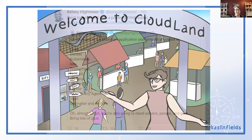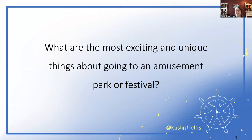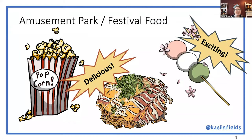Now we get to the meat of the presentation — welcome to CloudLand. I'm going to use an amusement park analogy to talk about the different categories of the cloud native landscape. What are some of your favorite parts of an amusement park? I love rides and the food — cotton candy, festival foods. I originally made this talk for a meetup in Tokyo, so I used some Japanese foods, which I'll explain.